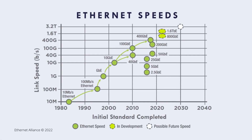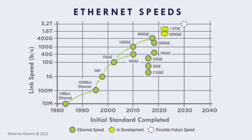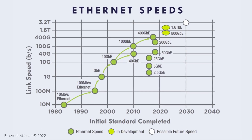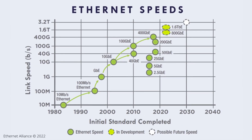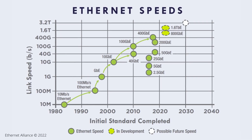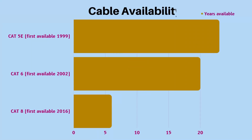Ethernet cables have evolved, offering speeds starting from 10BASE5 at just 10 megabits per second, to the latest ones now offering speeds of a whopping 400 gigabits per second. The most widely used Ethernet cable is the Cat 5e, but Cat 8 is now becoming the choice for most newer installations.